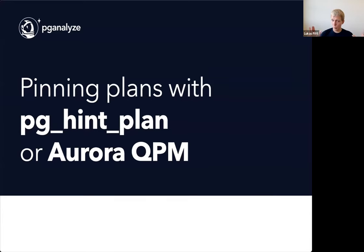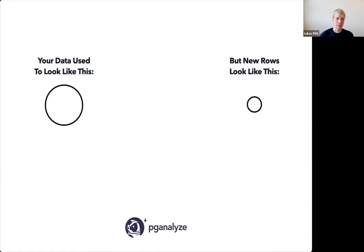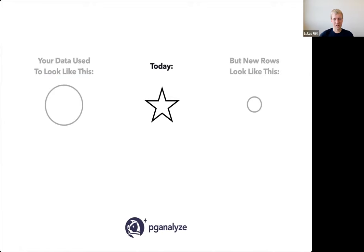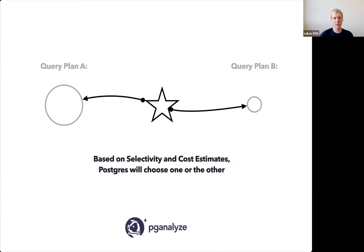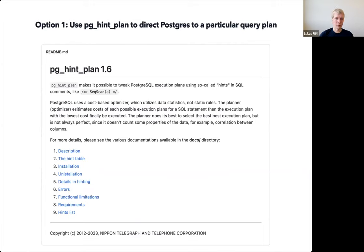Getting towards the end: there are two more things to cover — how to pin a plan and how to guide the planner. Pinning plans is the brute force method. Sometimes your data looks a certain way and then you start changing what you're inserting or updating. The new rows look a bit different. Postgres might sometimes choose one query plan and sometimes the other based on selectivity and cost estimates — those are statistical assumptions and Postgres gets it wrong sometimes. If you want Postgres to use one plan consistently, one option is pg_hint_plan, an extension similar to auto_explain that is also available on cloud providers like RDS.